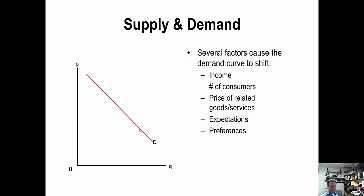There are five variables we focus on in this class that actually shift the demand curve: income, the number of consumers in the marketplace, the price of related goods and services, expectations about future incomes and prices, and tastes and preferences.